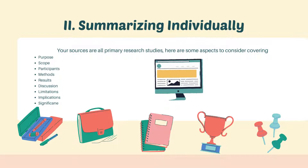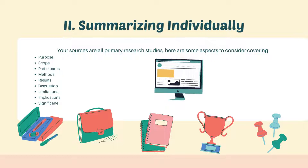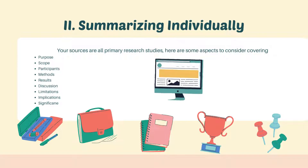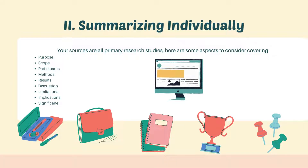You may need to separate your information into multiple paragraphs for each source. If you do, using proper headings in the appropriate citation style will help keep you organized. For our research paper, we will use the summarizing individually approach in organizing your literature review.